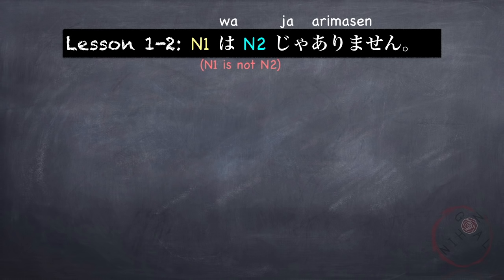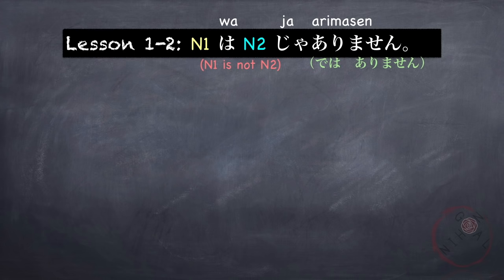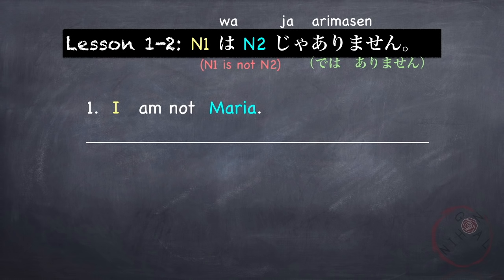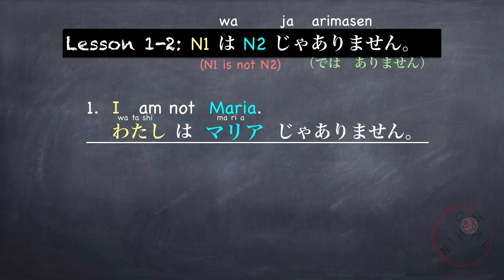The next grammar point is the negative form: N1 wa N2 ja arimasen, which means N1 is not N2 — the opposite of the first pattern. Ja arimasen is the negative form of desu. For writing in formal situations, instead of ja arimasen, we use de wa arimasen. For example, 'I am not Maria': Watashi wa Maria ja arimasen. If the affirmative is Watashi wa Maria desu, the negative is Watashi wa Maria ja arimasen.